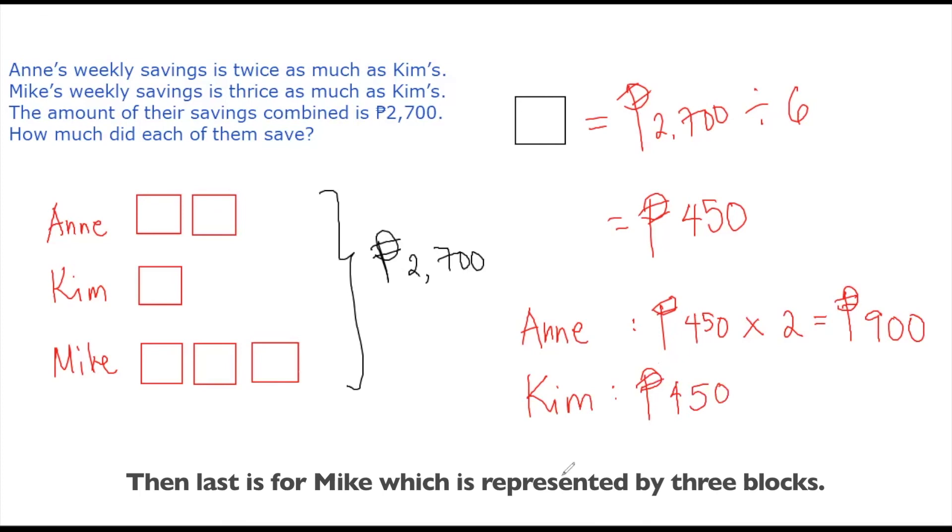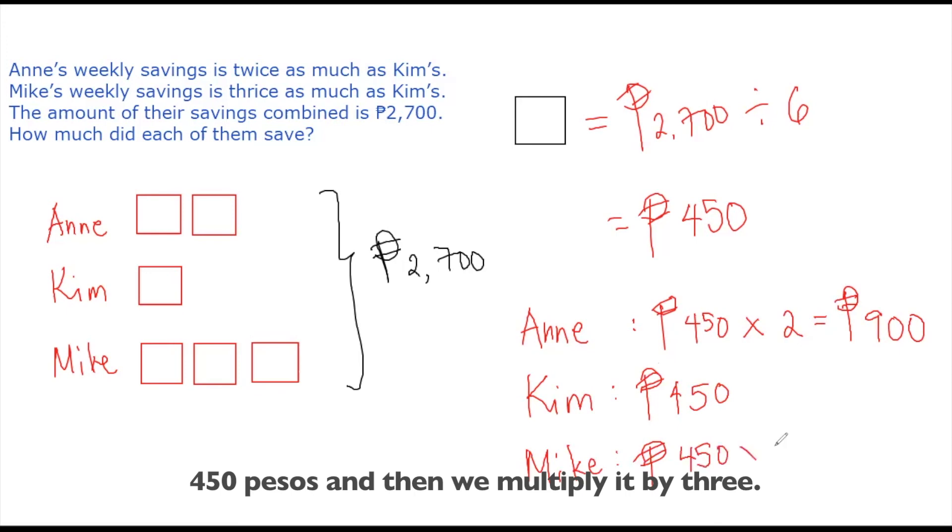And then last is for Mike, which is represented by three blocks. So we'll use the same amount for one block, which is 450 pesos, and then we multiply it by three. And that will give us 1,350 pesos.